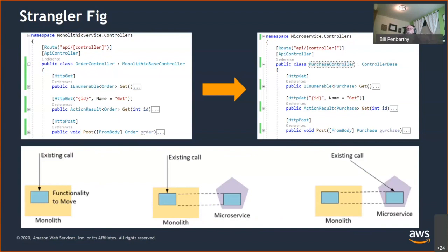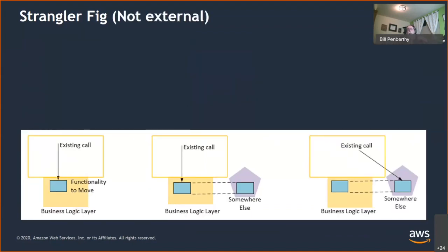The Strangler Fig is clear when you're looking at building microservices from a monolithic application. However, there's another way to look at it: within the system. A well-designed system has its own layers that in many ways can be looked at as discrete APIs. These discrete API calls can be Strangler-Figged in the same fashion as external calls. In this case, the existing call is defined as being a consumer from a higher layer, and the Purple Pentagon is not necessarily a new microservice — it's just somewhere else doing the processing. But it still requires changing the existing call.